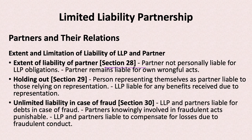LLP as a legal entity means partners are not personally liable for LLP's own wrongful acts. The concept of holding out: if a person represents themselves as a partner of, say, ABC LLP, and a third party relies on that representation and enters into a contract, then that person acting as a partner will be liable, but the LLP is not.